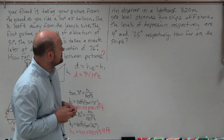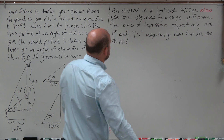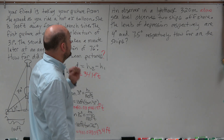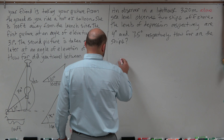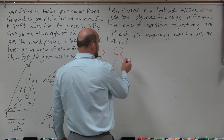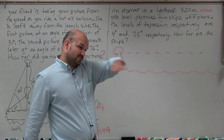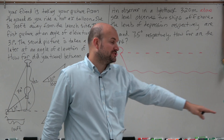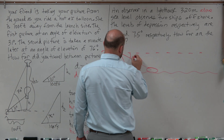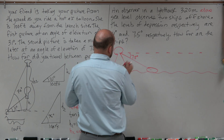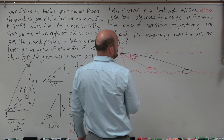For the next problem: an observer in a lighthouse is 320 meters above sea level and observes two ships offshore. The angles of depression are 4 degrees and 7.5 degrees respectively. How far apart are the ships? We have a lighthouse with a horizontal sight line, and the ocean below. Angles of depression go downward from horizontal. The first ship has an angle of depression of 7.5 degrees, and the second ship has an angle of depression of 4 degrees.